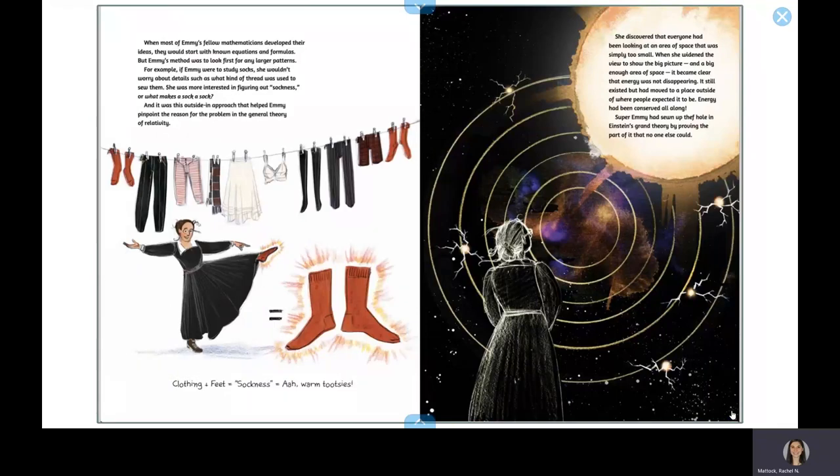When most of Emmy's fellow mathematicians developed their ideas, they would start with known equations and formulas. But Emmy's method was to look first for any larger patterns. For example, if Emmy were to study socks, she wouldn't worry about details such as what kind of thread was used to sew them. She was more interested in figuring out sockness or what makes a sock a sock.